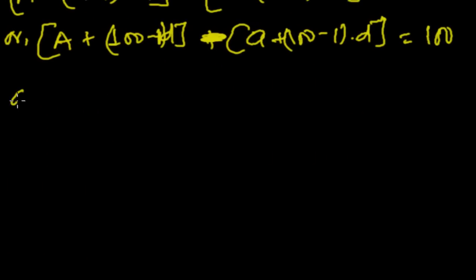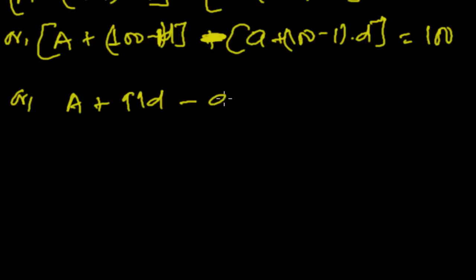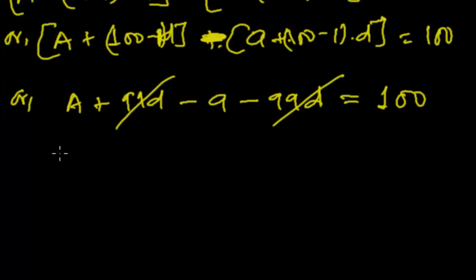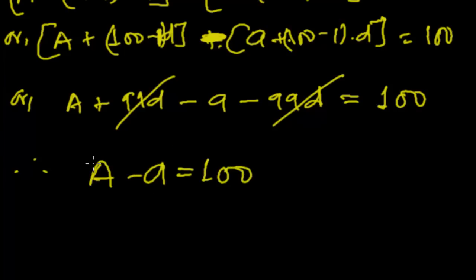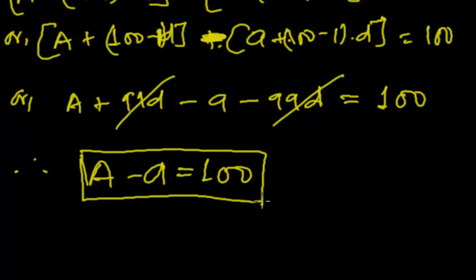Expanding this: A plus 99D minus A' minus 99D equals 100. The 99D terms cancel out. Therefore, we get that the difference between their first terms, A minus A', equals 100. This is a very logical relationship.